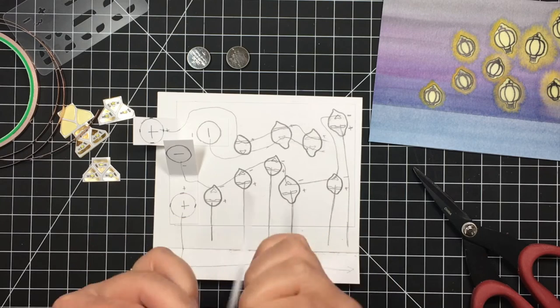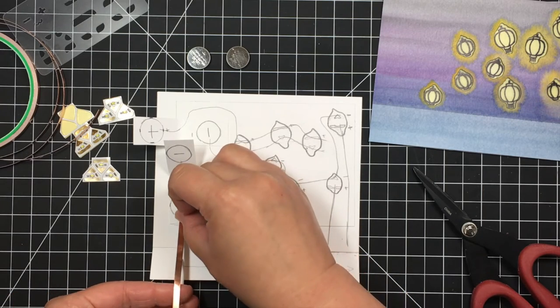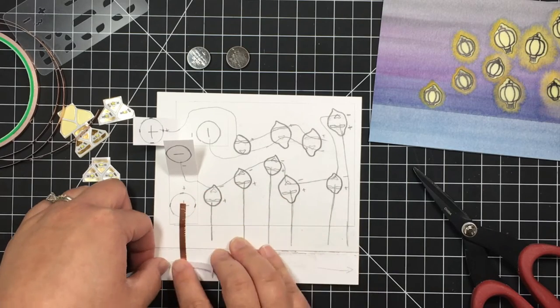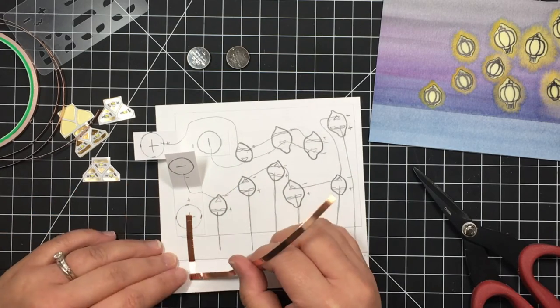I lay down all of my copper tape taking care to use only one strip of tape per line. To go around corners I fold the tape back on itself and then fold it forward to create a 90 degree angle.